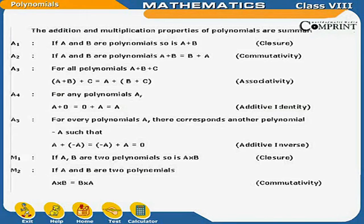Addition and multiplication properties of polynomials: A1 — if A and B are polynomials, so is A plus B (closure property). A2 — A plus B equals B plus A (commutative property). A3 — (A plus B) plus C equals A plus (B plus C) (associativity). A4 — for any polynomial A, A plus 0 equals 0 plus A equals A (additive identity).